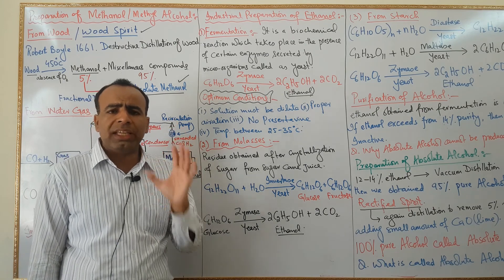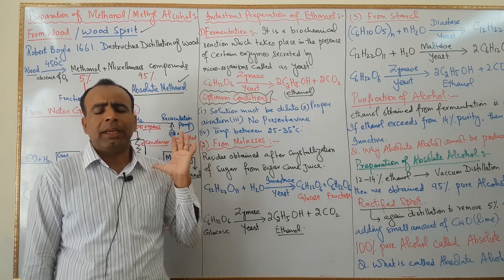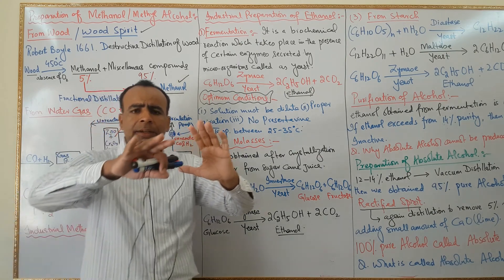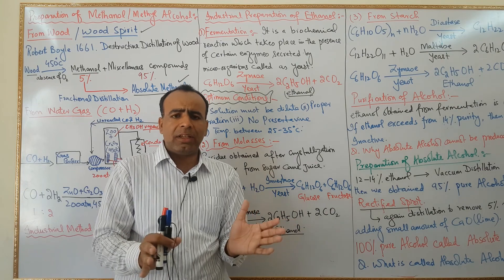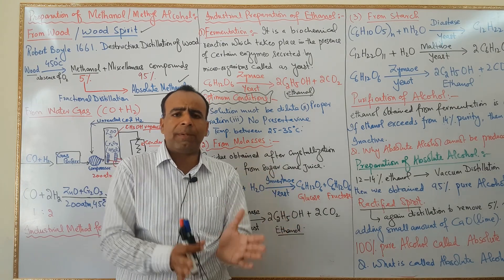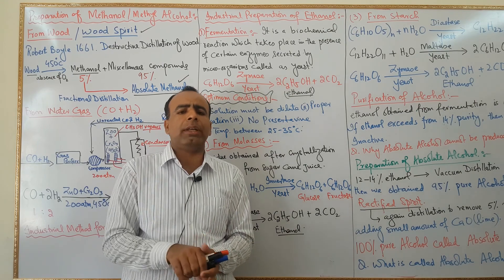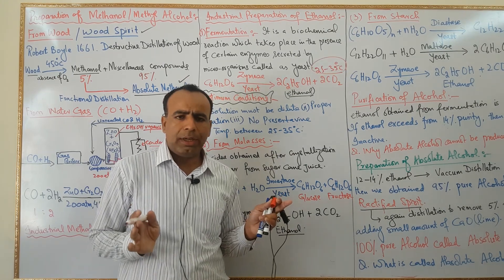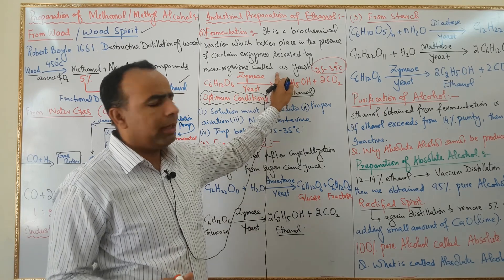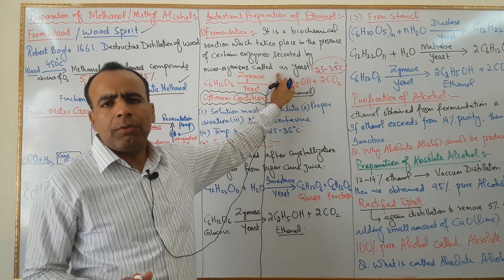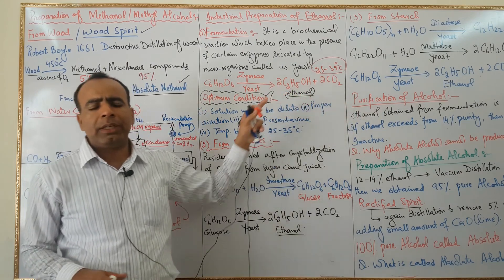This process takes four to six weeks to complete. The pot is buried in the ground in a dirty, littered area. My dear students, as I told you, it is a slow process and will take around four to six weeks, and ethanol will be prepared.